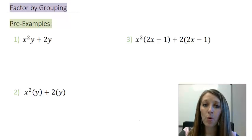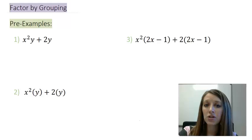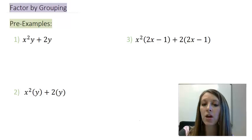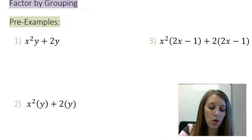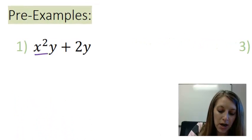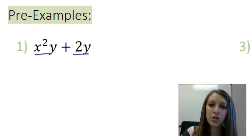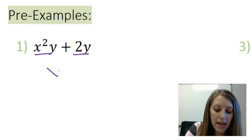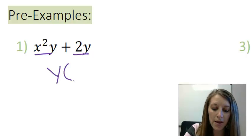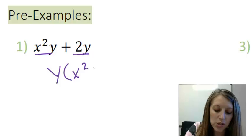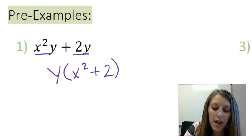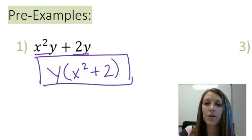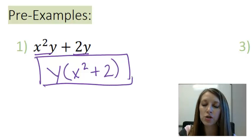I'm going to focus on example one first and factor it using the only technique we know up to this point, which is factoring by common factor. If I look at my two terms here — x squared y plus 2y — I notice they have a common factor of y. So I take out my common factor of y, and that leaves me with x squared plus 2. You can always check this by distributing that y back through.